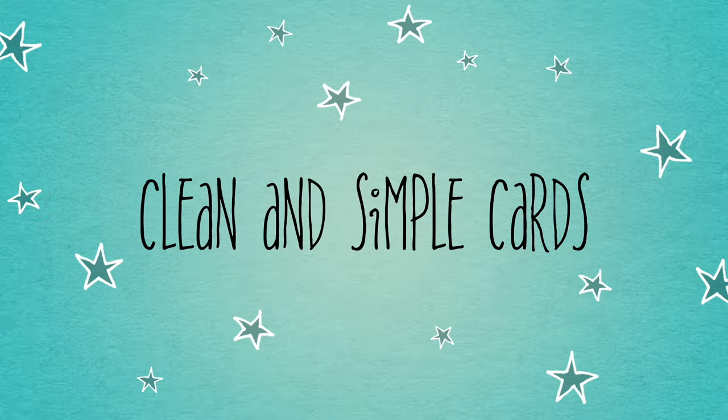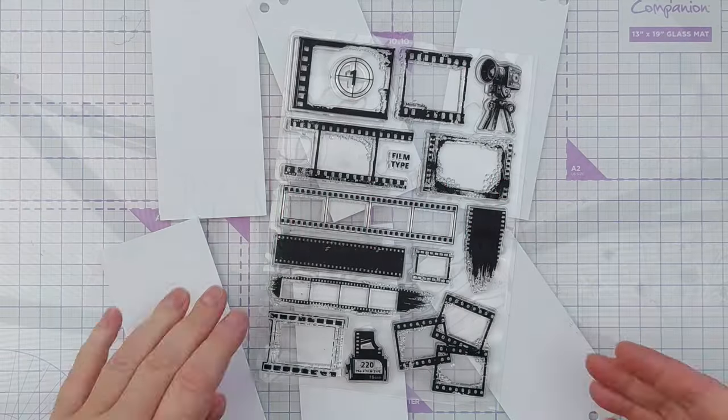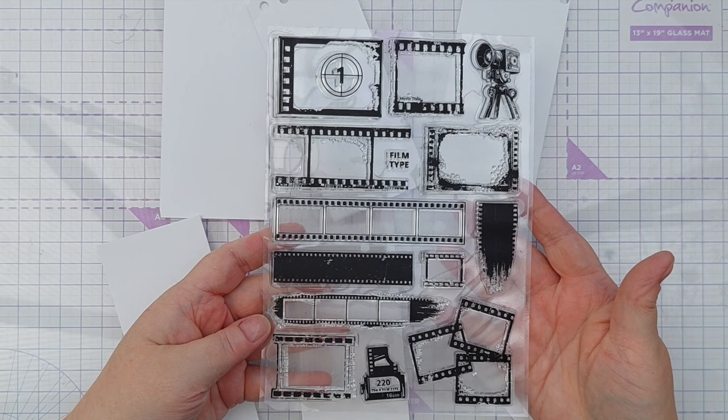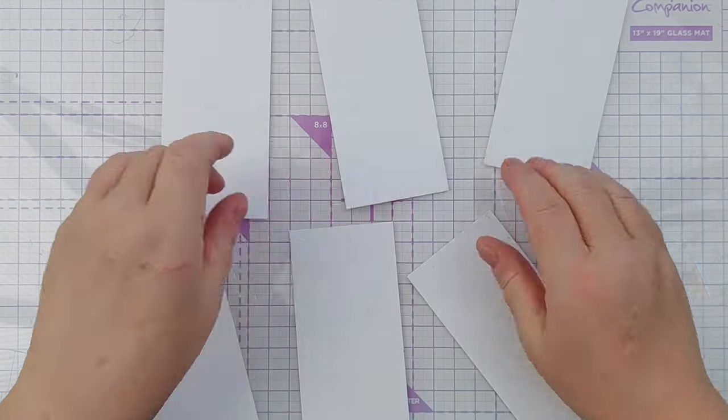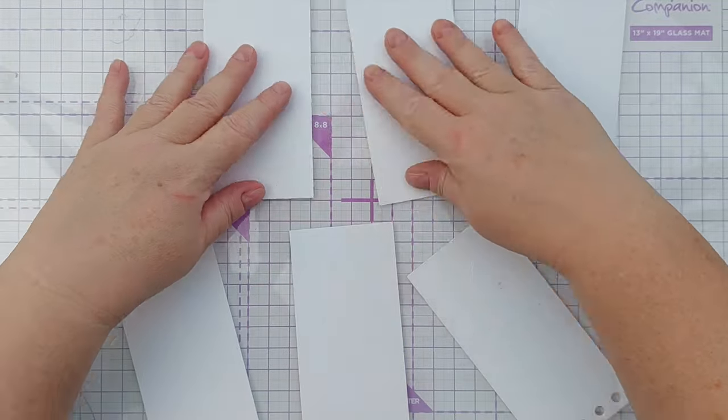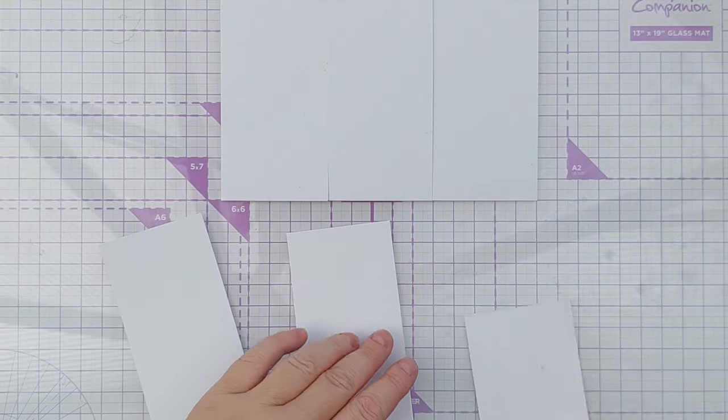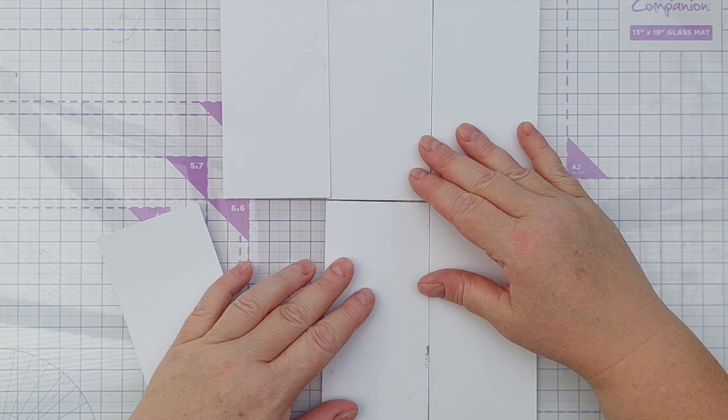Hello crafty friends, welcome to another Stamping September bonus video. Today I'm going to be using this grungy film strip negative camera themed stamp set to add some visual texture to these scraps of white mixed media card. These are leftover from a previous project.